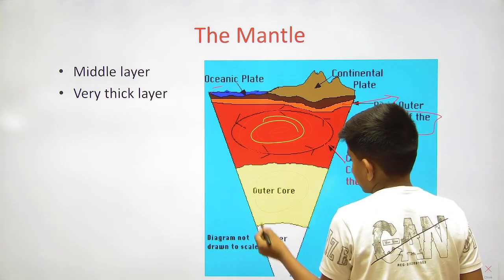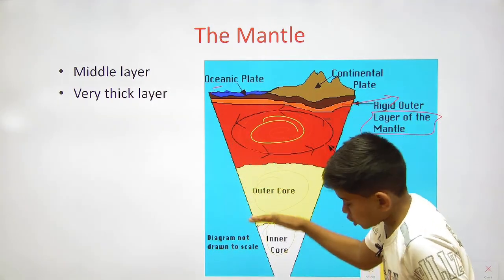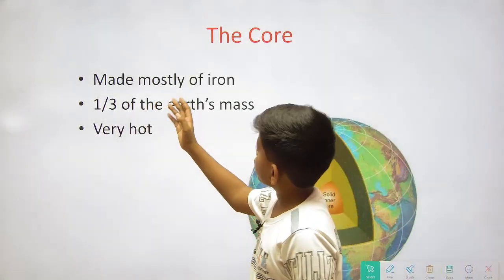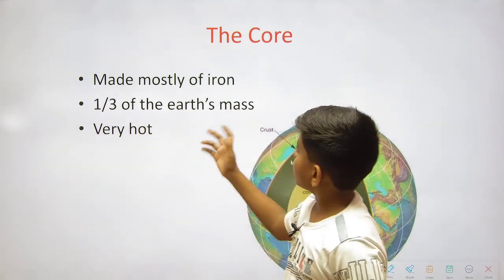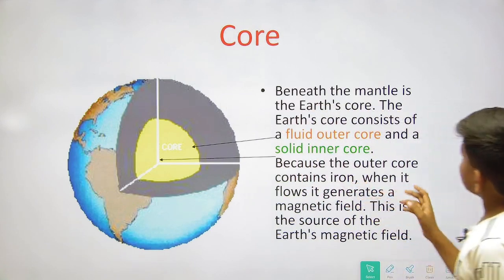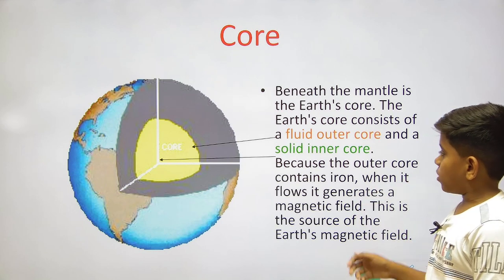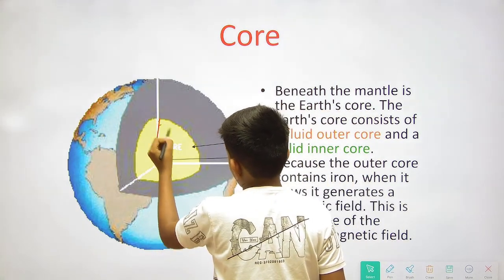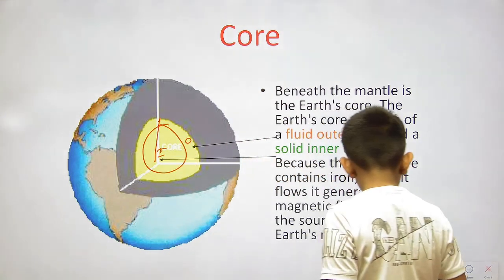Here is a diagram showing the distribution of the layers — outer core and inner core. The core is made mostly of iron and makes up one third of the earth's mass. It is very hot. Beneath the mantle is the earth's core, which consists of a fluid outer core and a solid inner core.